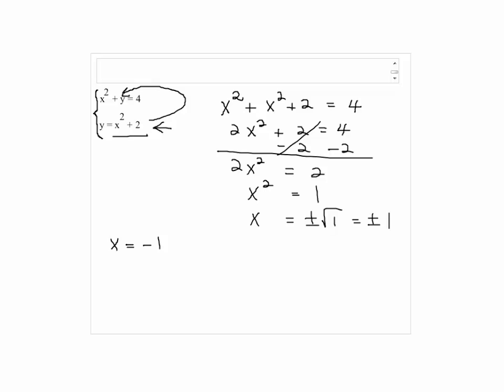We're going to find y when x equals negative 1. So y equals negative 1 squared plus 2, which is 1 plus 2, which is 3. And when x equals 1, y is also 3, since 1 squared plus 2 equals 3.